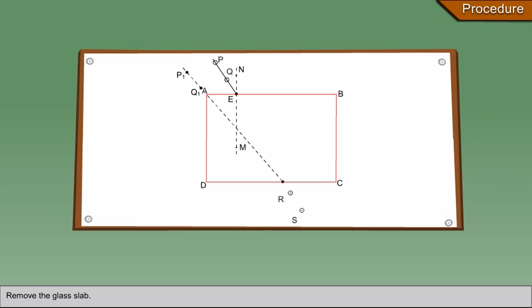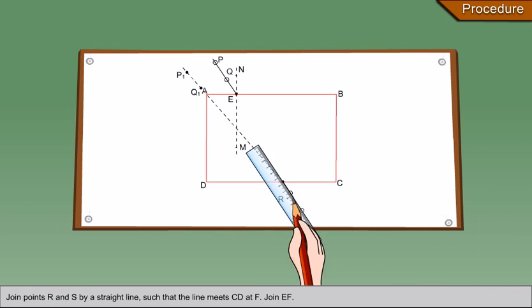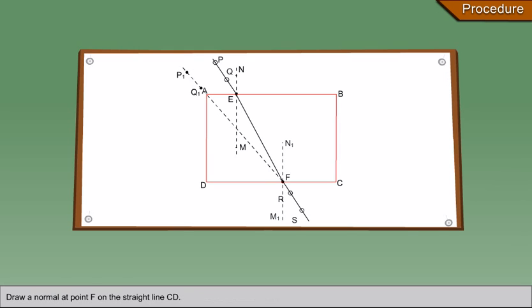Remove the glass slab. Join points R and S by a straight line such that the line meets CD at F. Join EF. Draw a normal at point F on the straight line CD.